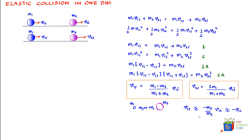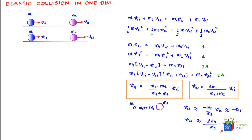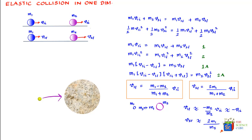For the velocity of m2 in Case 1: v2_final ≈ (2m1 / m2) · v1_initial, since m1 + m2 ≈ m2. Because 2m1 is very small and m2 is very large, v2_final is a very small value. This makes sense — if a tennis ball hits a large boulder, the boulder would hardly move.